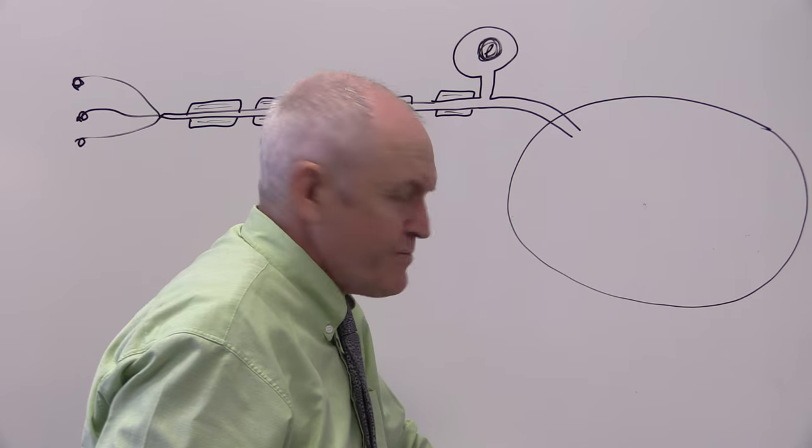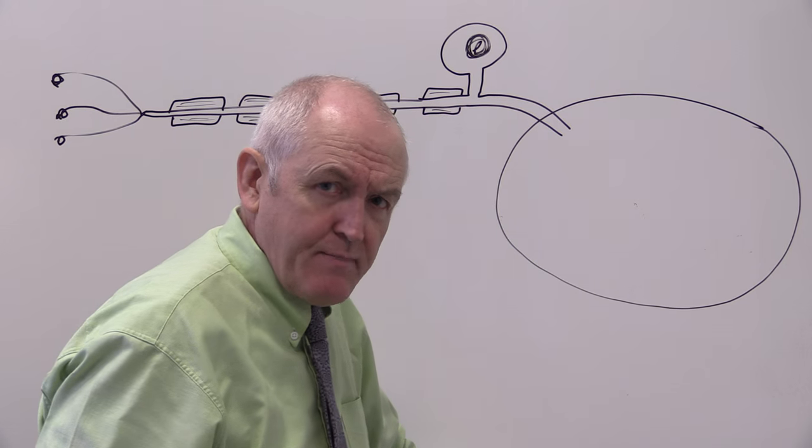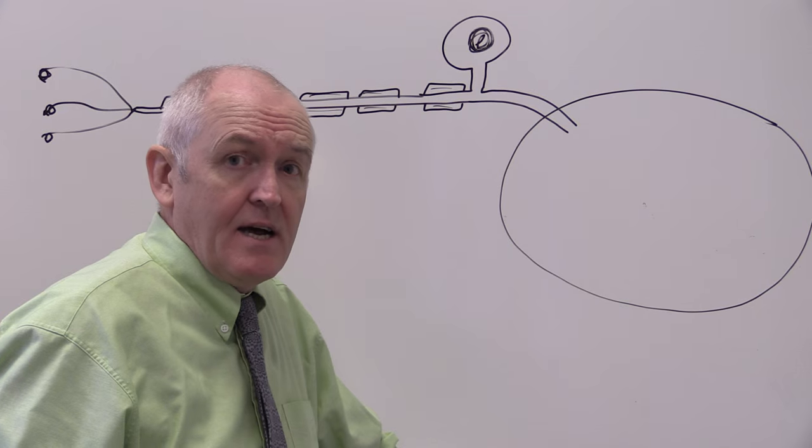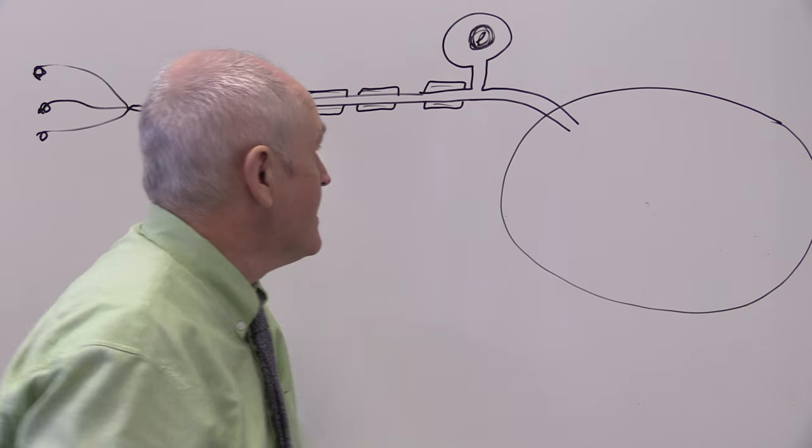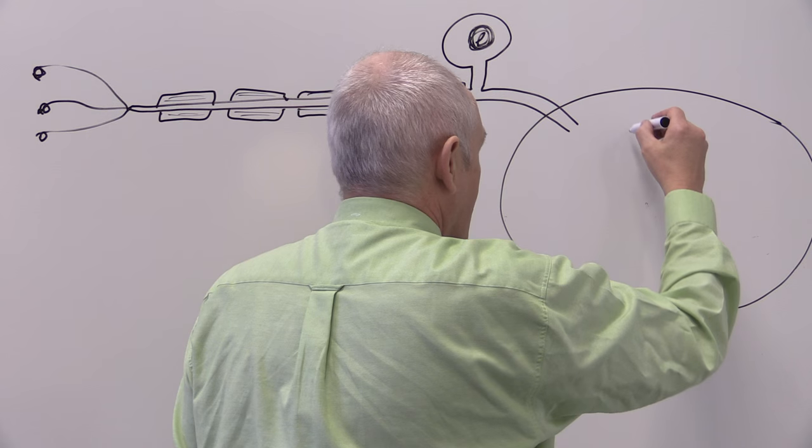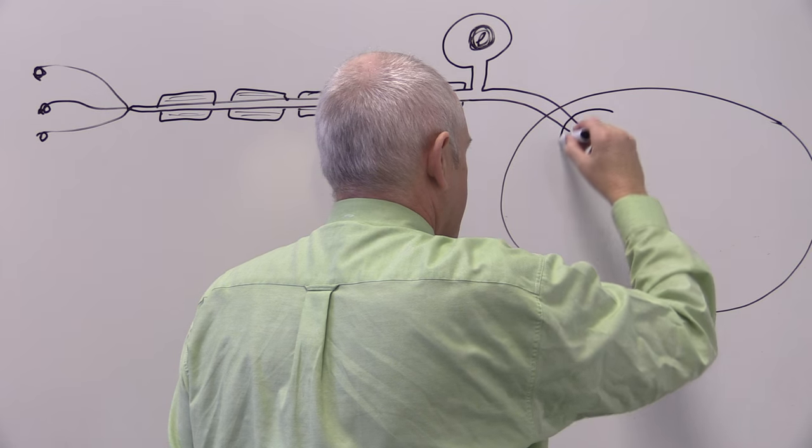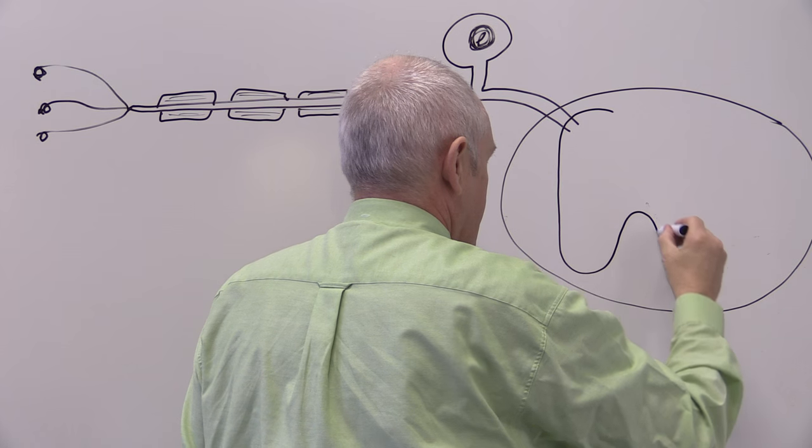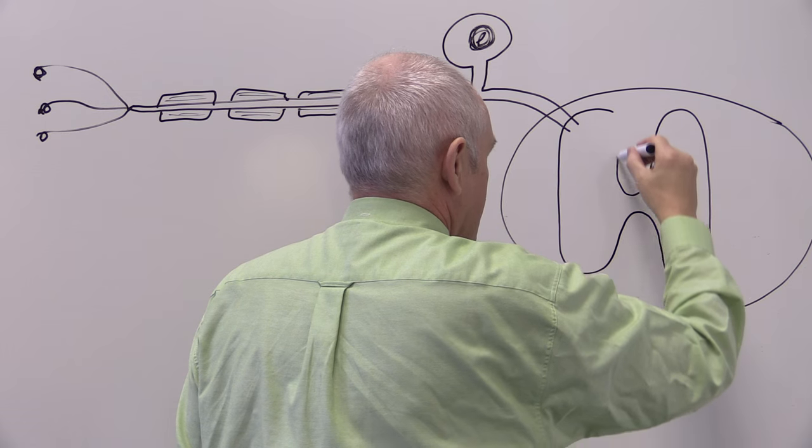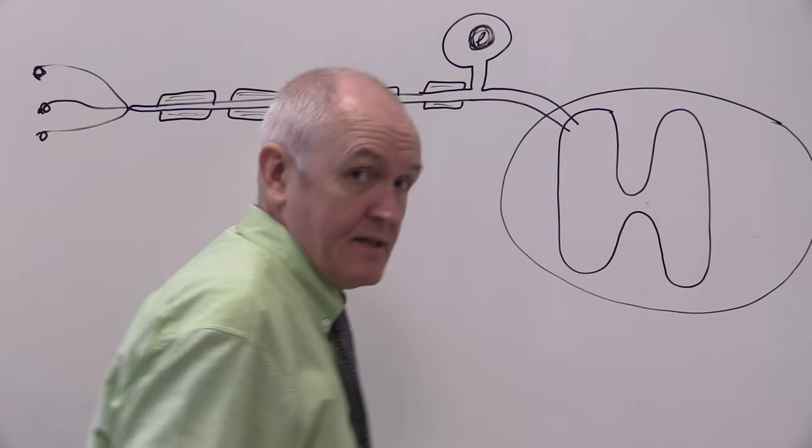Now in the spinal cord there's two sorts of matter: there's gray matter and there's white matter. And the gray matter forms an H-shape, so the gray matter forms an H-shape inside the spinal cord like that.